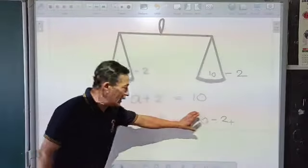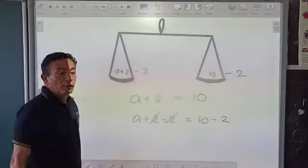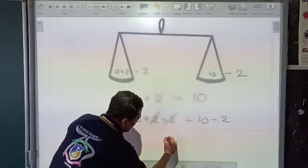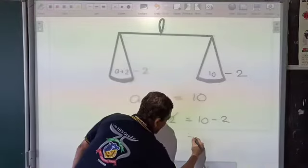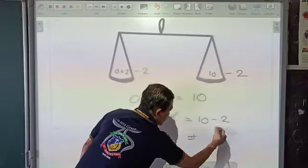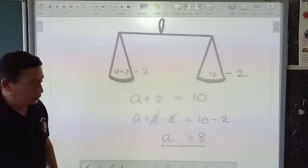Now when I look at this, plus 2 and minus 2, they can cancel. So on my left hand side I am left with a. And a will be equal to 10 minus 2, which is equal to 8. This is the concept we are going to use.